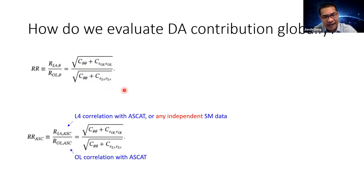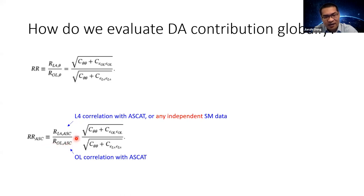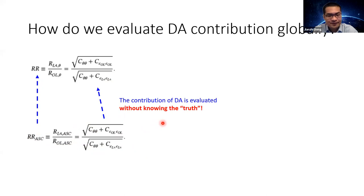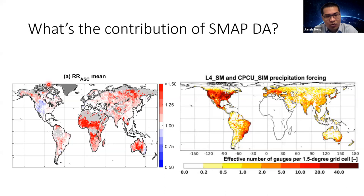We do not know the truth at the global scale, but we do have independent soil moisture products — for example, ASCAT. If we replace the truth with ASCAT soil moisture we get a new equation for the RR value evaluated using ASCAT. After some math, we find that this term is equivalent to the true RR value, meaning that based on ASCAT or any independent soil moisture product, we can evaluate the true data assimilation contribution to soil moisture estimates at the global scale.